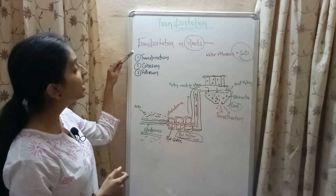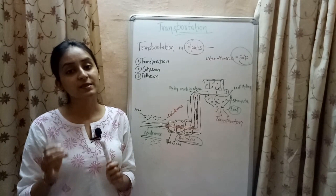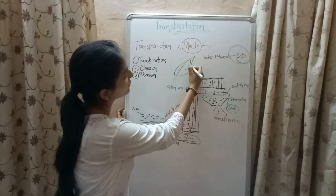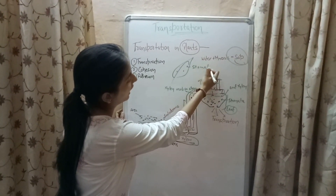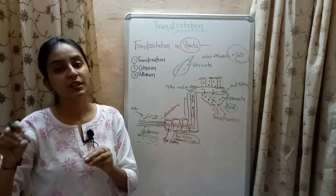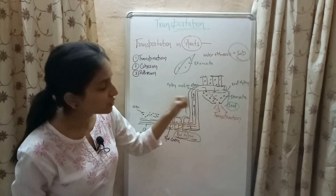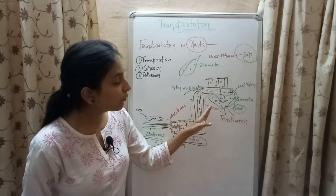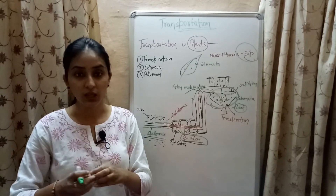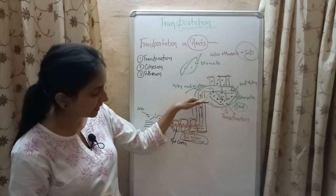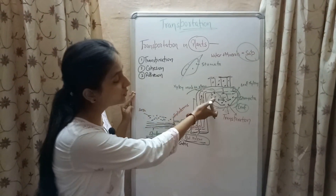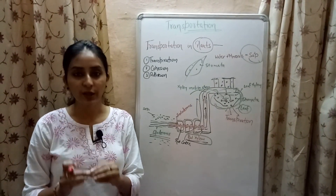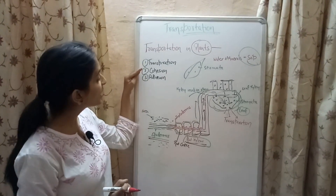The three forces that help in transportation of water and minerals are transpiration, cohesion, and adhesion. Transpiration is the process of loss of water from the leaves of the plant. The leaves contain tiny pores called stomata, and water is continuously evaporated from these stomata. To compensate this loss, water must be continuously supplied to the leaf region. The lack of water in the leaf region creates a suction pull that helps in pulling water upward, from the root region to the stem and leaves.